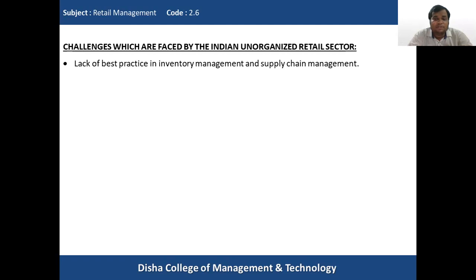Inventory management is difficult because they keep very minimum inventory to avoid overstocking or unsold stock. Supply chain management is also weak because suppliers have an advantage over small unorganized retailers — they lack bargaining power to negotiate good rates, and suppliers don't maintain consistent or timely deliveries. This is one of the major challenges in inventory and supply chain management.